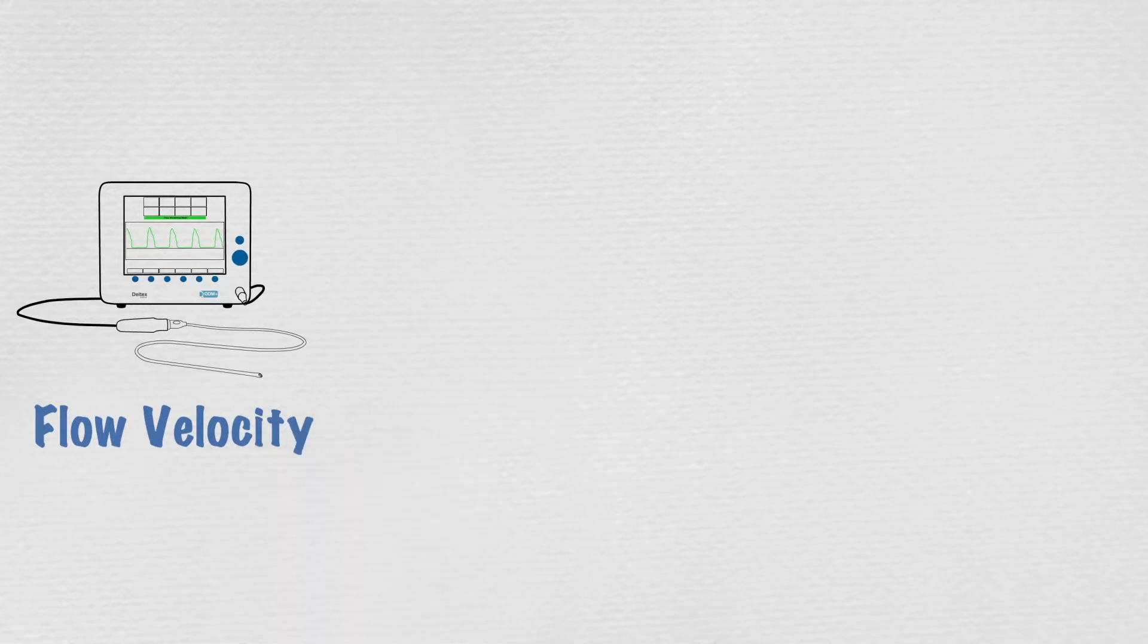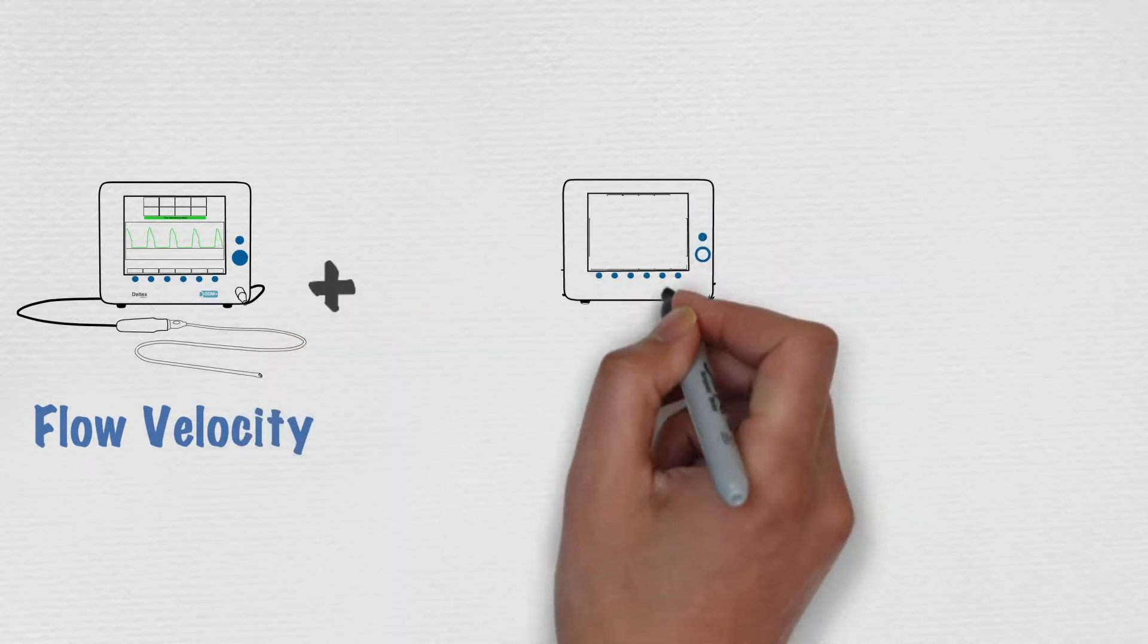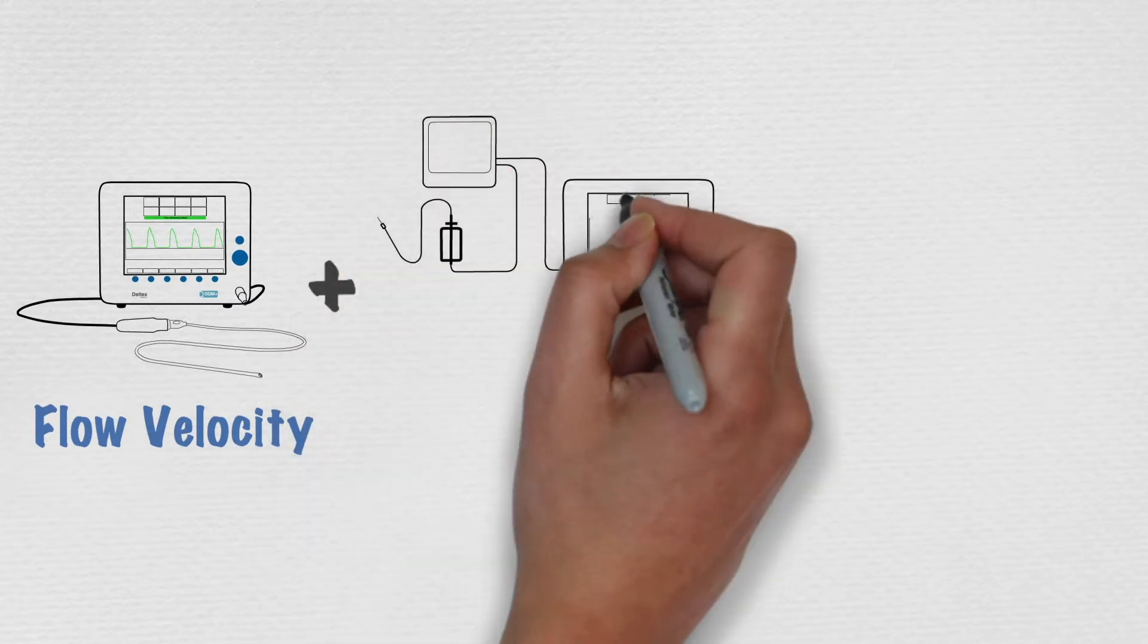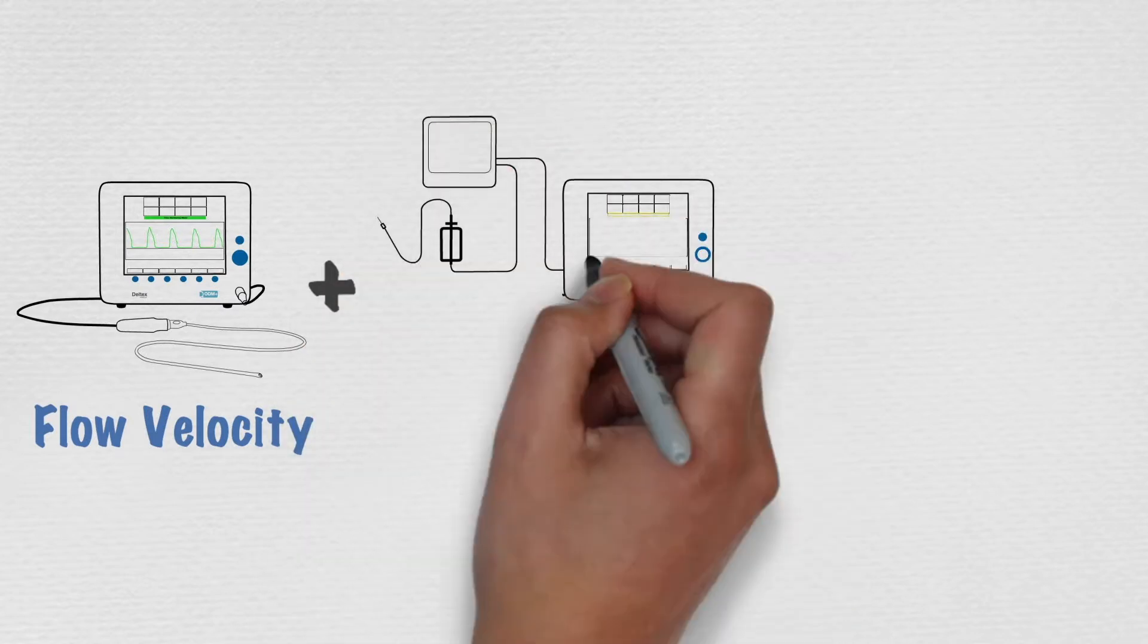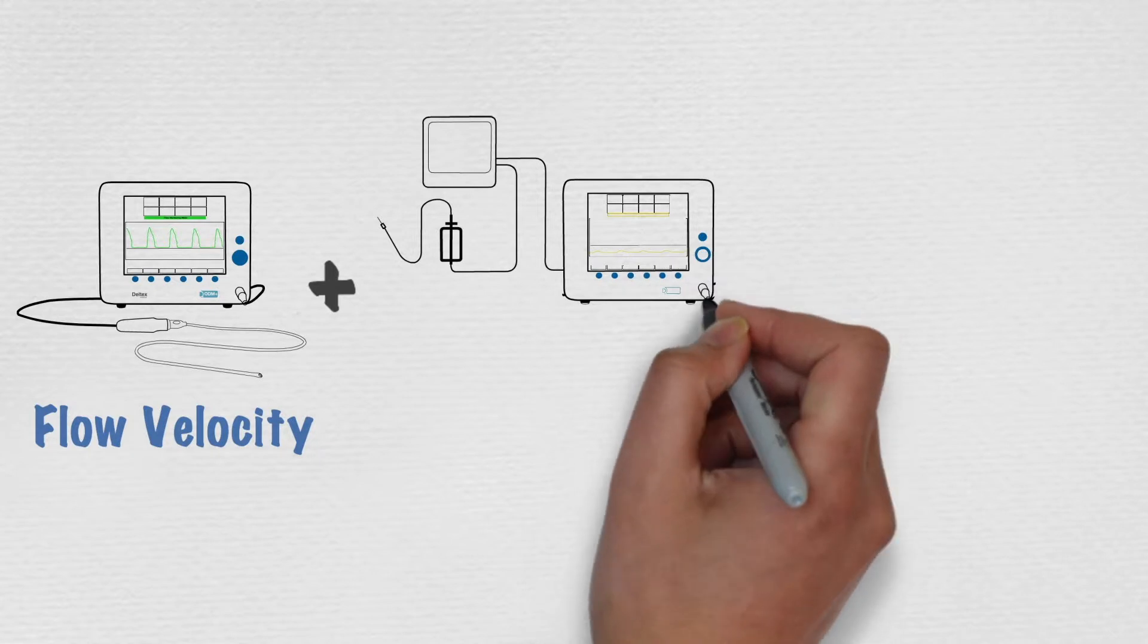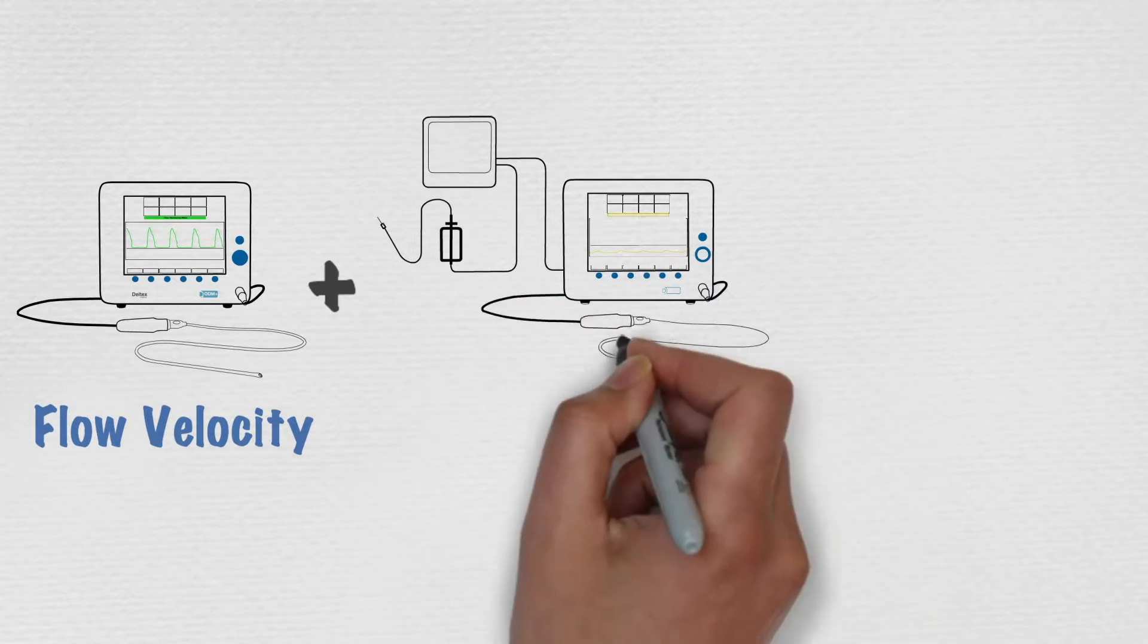Until now, haemodynamic monitoring has centred around cardiac output and associated parameters. And whilst these parameters are still available on the ODM+, VP loops are a new addition, and the ODM+ is the only technology able to do this.